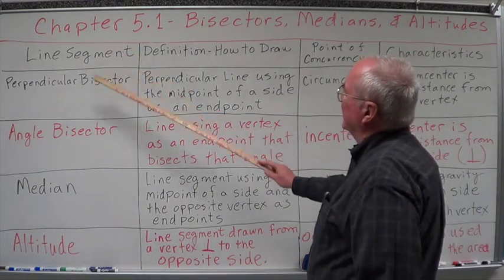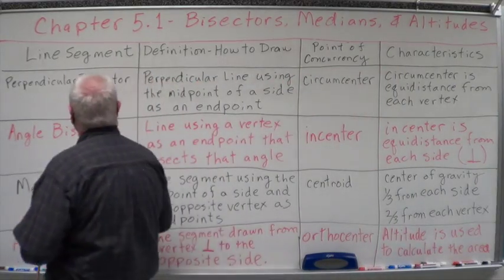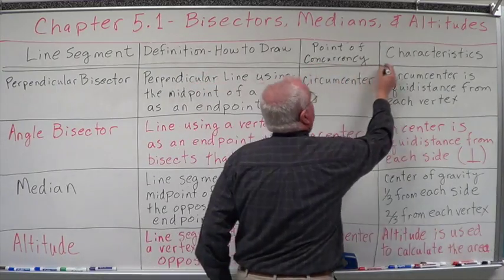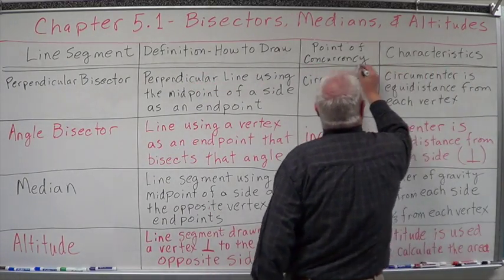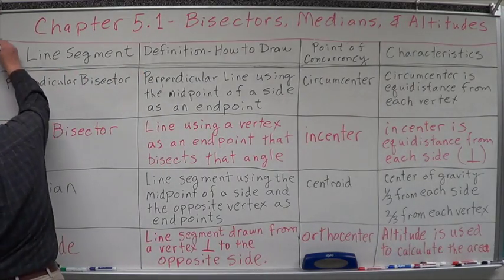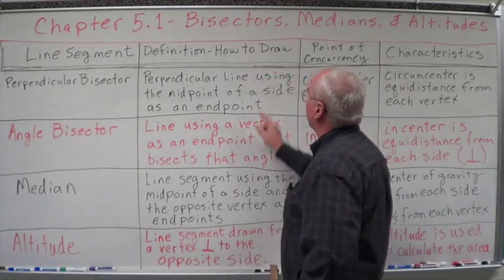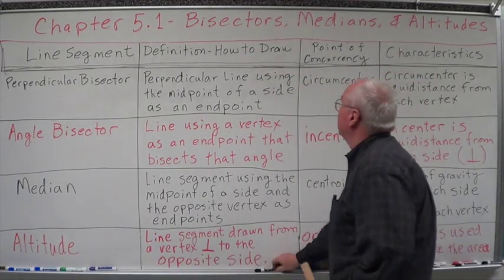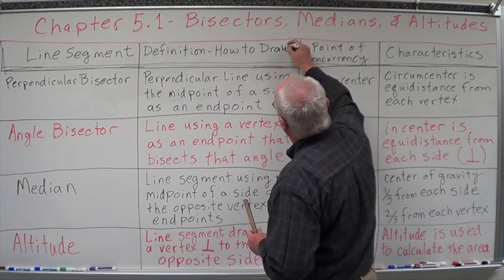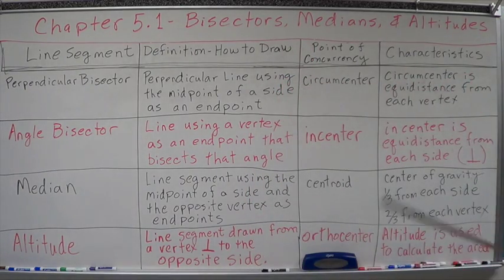What we've got is a line segment. What type of line segment is it? Let me underline this twice so it looks a little different up here — make it a little bolder. So what type of line segment is it? Definition or how to draw it. What is its point of concurrency? And what are the characteristics of that point of concurrency and of that particular set of lines?